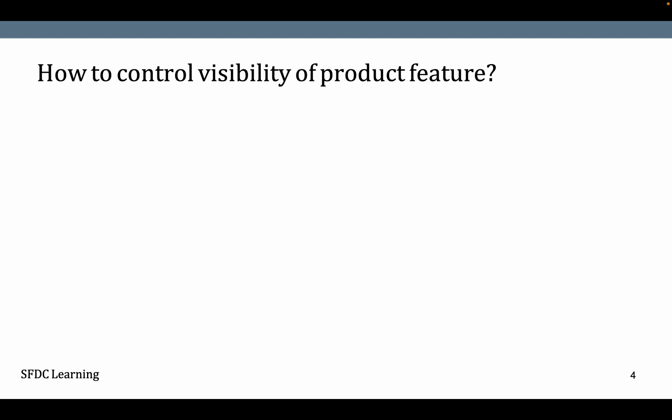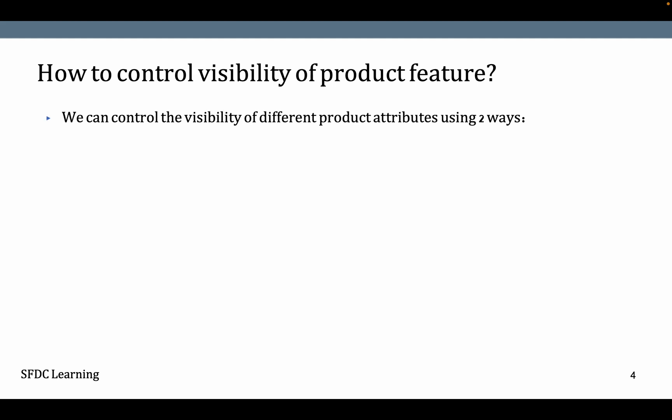How do we control the visibility of product features? We can control the visibility of different product attributes using two ways: attribute value matrix, which we have seen in the last video, and product attribute rule.